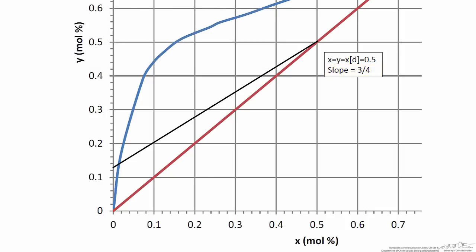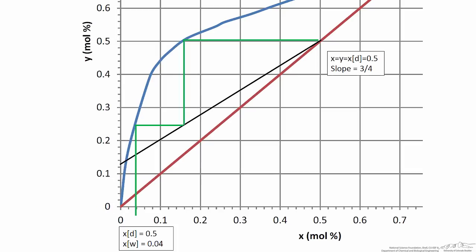When we plot that operating line, we can step off two stages and determine that when we have a distillate composition of 0.5, which is our end point in the distillation operation, the composition in the reboiler is 4% ethanol. Now we have a relationship between xD and xW at the end of our process.